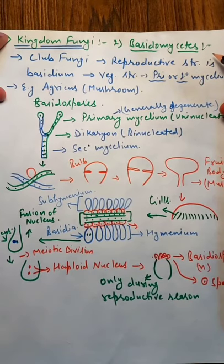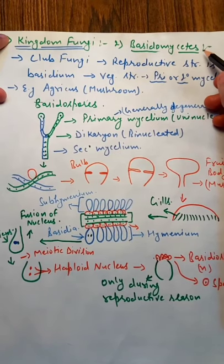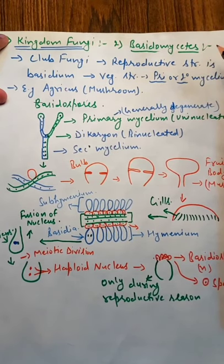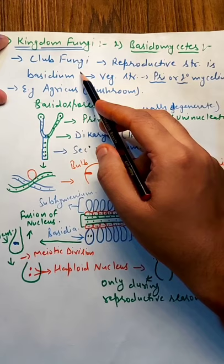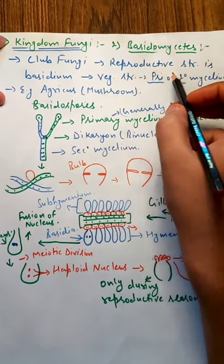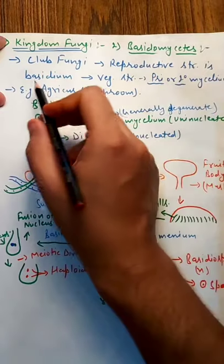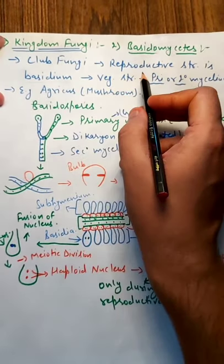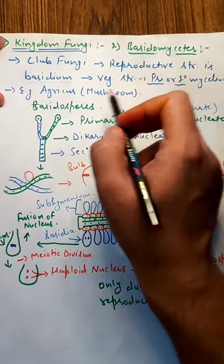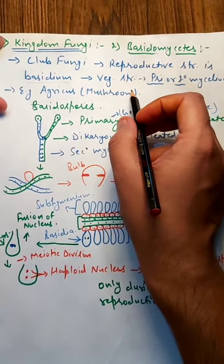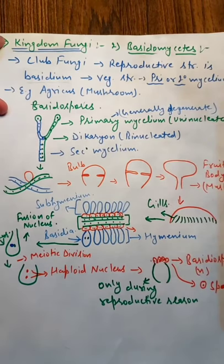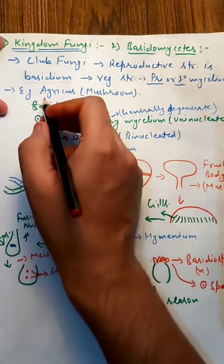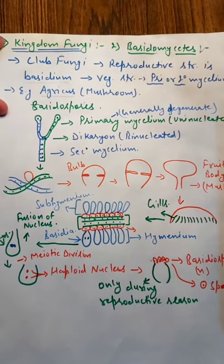This is higher fungi, septate type. In the septate type, the first is Ascomycetes and second is Basidiomycetes. So this is commonly known as club fungi. Club fungi's reproductive structure is the basidium. In this club fungi, the reproductive structure is known as basidium. Vegetative structure is primary or secondary mycelium. And the most famous example of club fungi or Basidiomycetes is Agaricus. Agaricus is the edible mushroom.